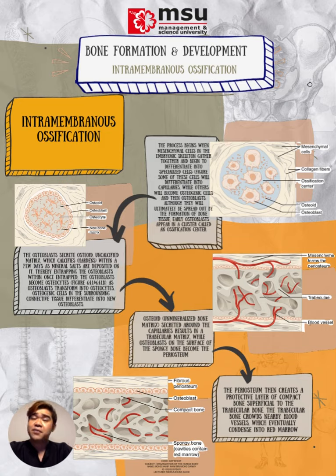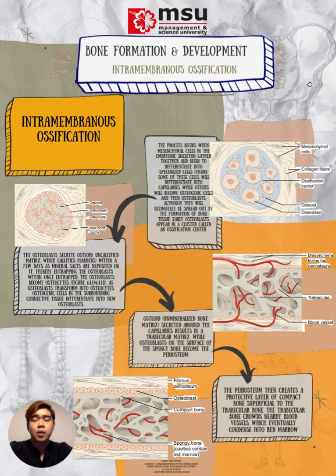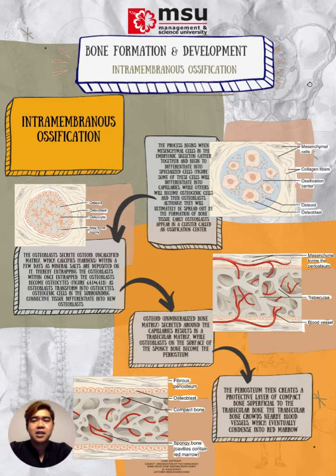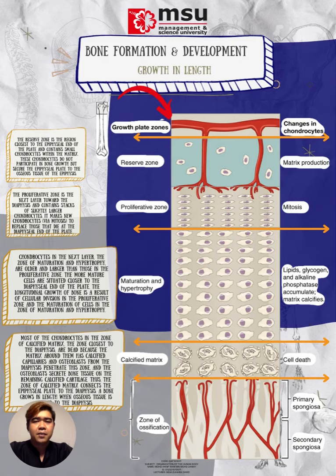Intramembranous ossification begins in utero during fetal development and continues into adolescence. At birth, the skull and clavicles are not fully ossified, nor are the sutures of the skull closed. This allows the skull and shoulders to deform during passage through the birth canal. The last bones to ossify via intramembranous ossification are the flat bones of the face, which reach adult size at the end of the adolescent growth spurt.